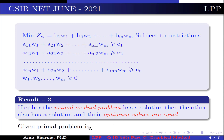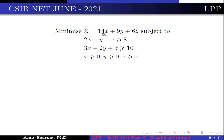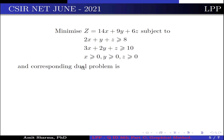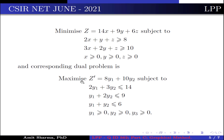The given primal problem is: minimize z = 14x + 9y + 6z, subjected to 2x + y + z ≥ 8, 3x + 2y + z ≥ 10, where x, y, z ≥ 0. The corresponding dual problem is: maximize z' = 8y1 + 10y2, subjected to 2y1 + 3y2 ≤ 14, y1 + 2y2 ≤ 9, y1 + y2 ≤ 6, where y1, y2 ≥ 0.